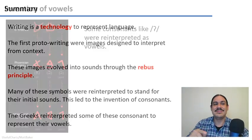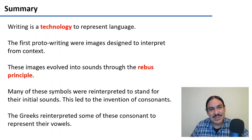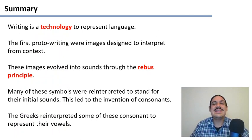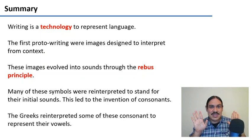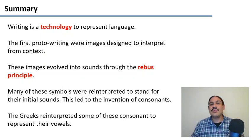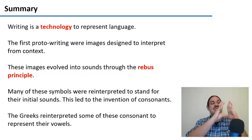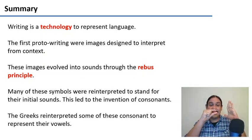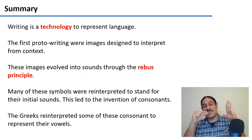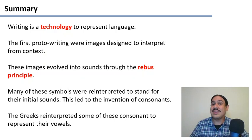In summary, writing is a technology to represent language and is very different from language itself. The first proto-writing was images designed to be interpreted from context, which evolved through the rebus principle into sound representations, interpreted first as consonants and eventually reinterpreted as vowels. In the next video we'll look at other types of writing systems.